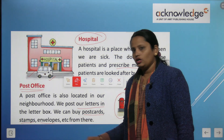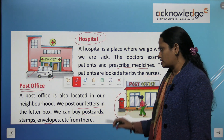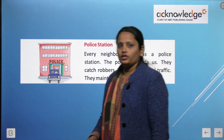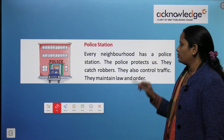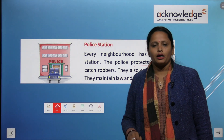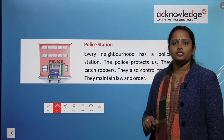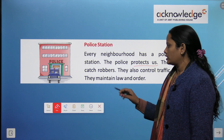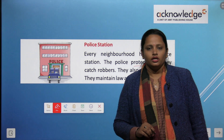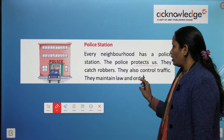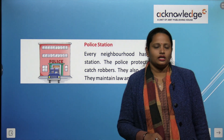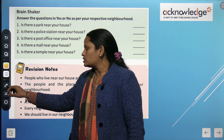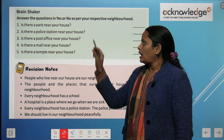From the post office we can buy envelopes, postcards, stamps and many more things. The next place is the police station. Every neighborhood has a police station. The police protect us, they catch robbers, and they also control traffic.